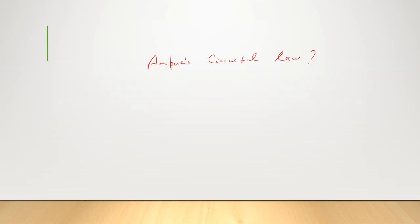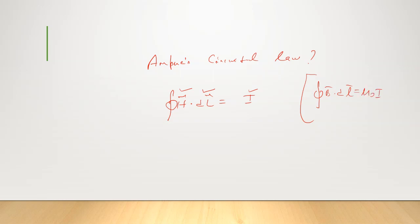The statement of Ampere's circuit law states that the closed line integral of the magnetic field H around any closed path or circuit is equal to the current enclosed by the path. You may have seen B·dL = μ₀I in previous classes, but since B = μ₀H, substituting gives H·dL = I. This is the statement of Ampere's circuit law.